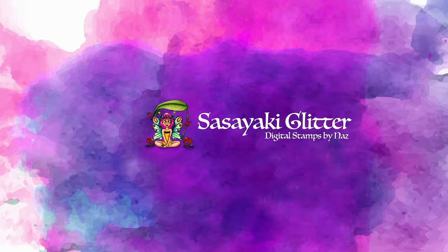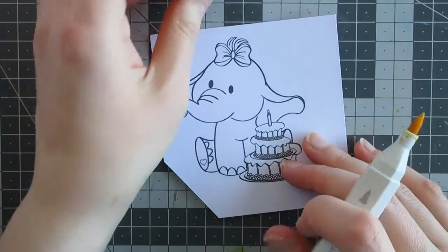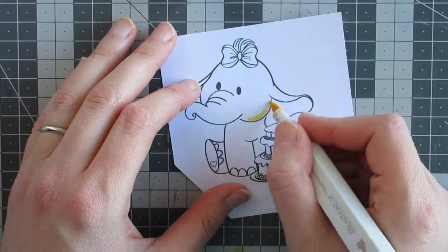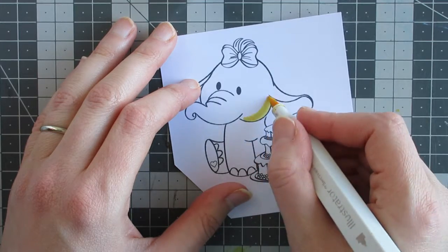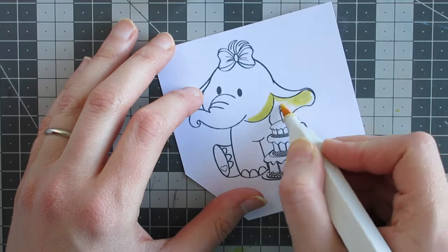Hello and welcome back, Lady Joyful here with a video for Sasayaki Glitter. In today's video I'm going to be making a birthday card using the Baby Ellie digi stamp and I'm going to be concentrating on cast light.